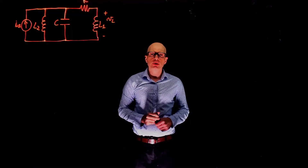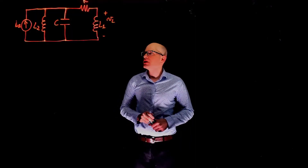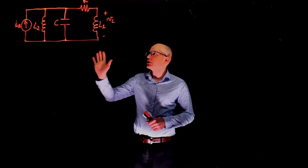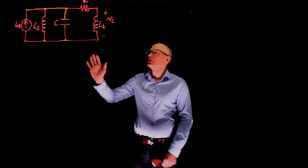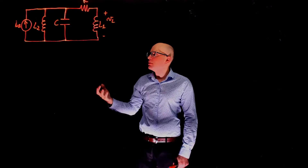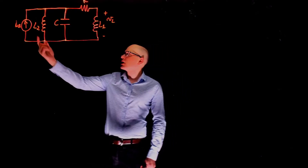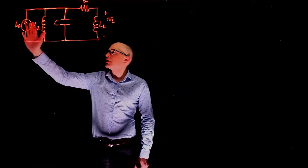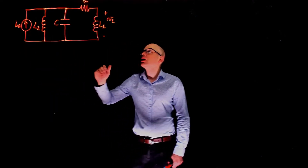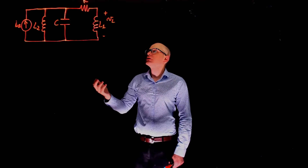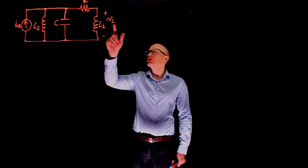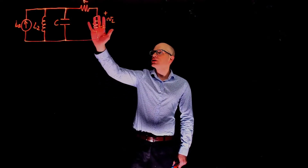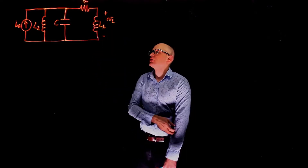In this example, we are looking to determine the state space representation of this circuit. The input here is IA — a current being applied — and the output is the voltage VL across this inductor.